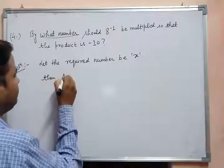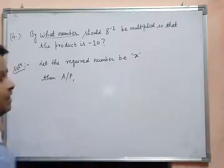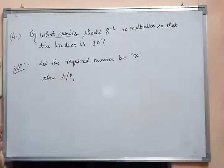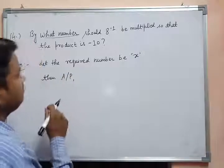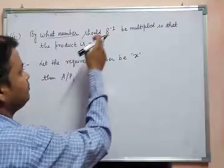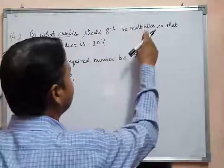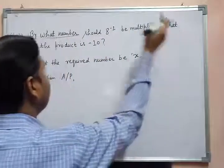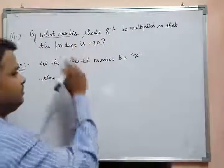Then, according to the problem, the question says that by what number should 8 inverse be multiplied so that the product is minus 10? This means 8 inverse into x is equal to minus 10. So this is the equation for the given condition.